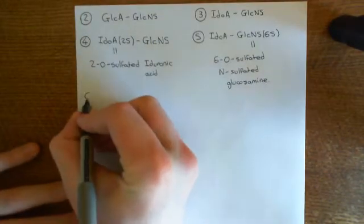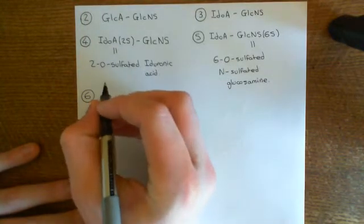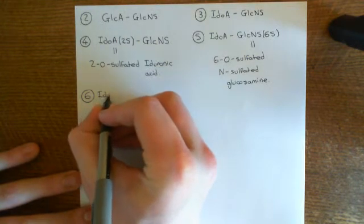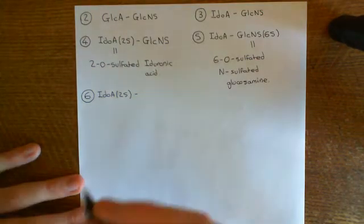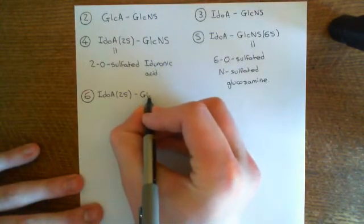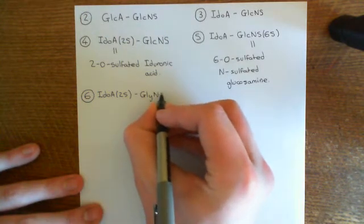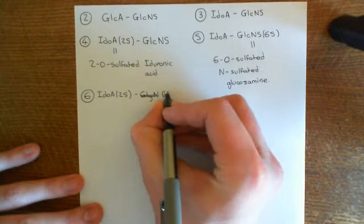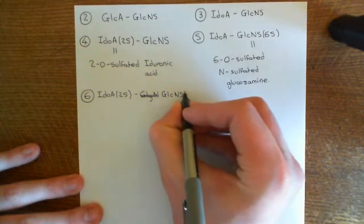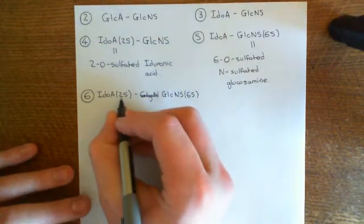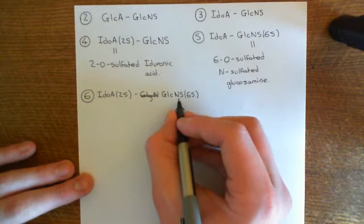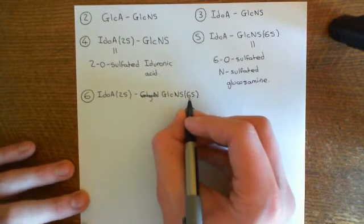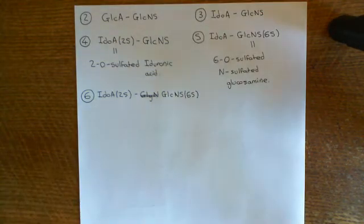The sixth and final disaccharide commonly used in glycosaminoglycans: you have IdoA2S — 2O-sulfated iduronic acid — in the uronic acid position, and then GlcNS6S — 6O-sulfated, N-sulfated glucosamine — again. So that's an iduronic acid with a sulfate group coming off the second alcohol group, and then a glucosamine with a sulfate group coming off both the amino group on the second carbon and the alcohol group on the sixth carbon.